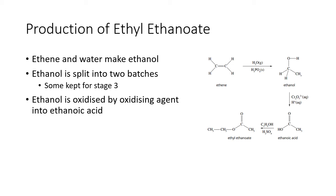In step two, that batch of ethanol is oxidized by an oxidizing agent into ethanoic acid. They might use dichromate and water, but in industrial scale they'd use something larger to oxidize it. Either way, you get ethanoic acid by the end of it.